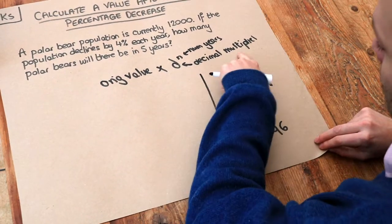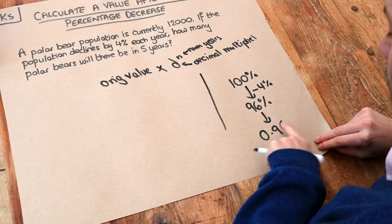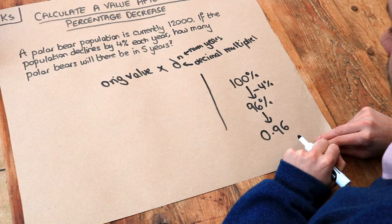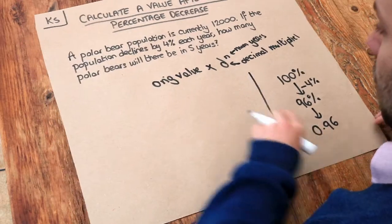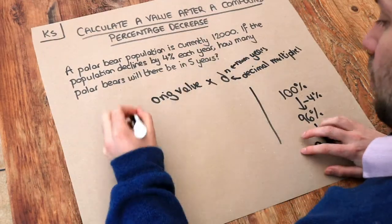And what this decimal multiplier means is that if we multiply by 0.96, that will decrease our value by 4%.